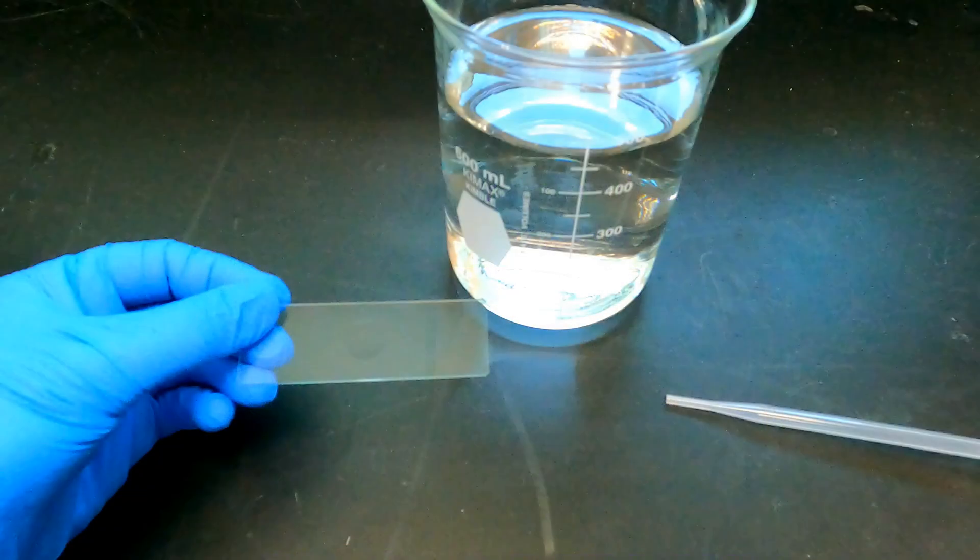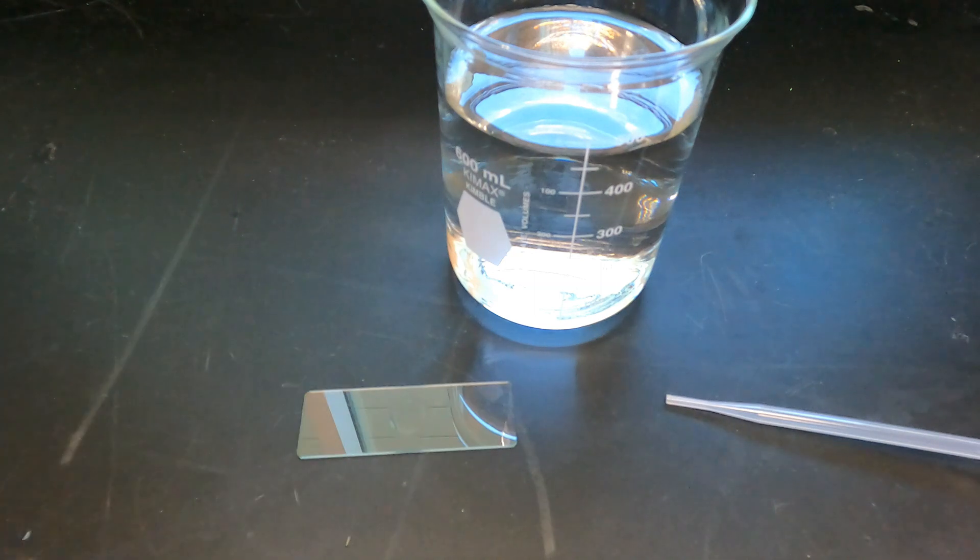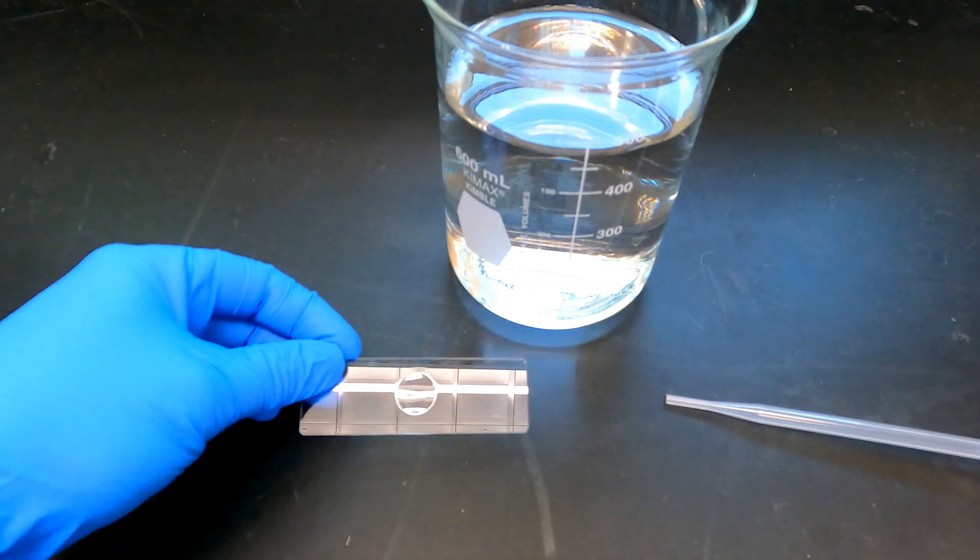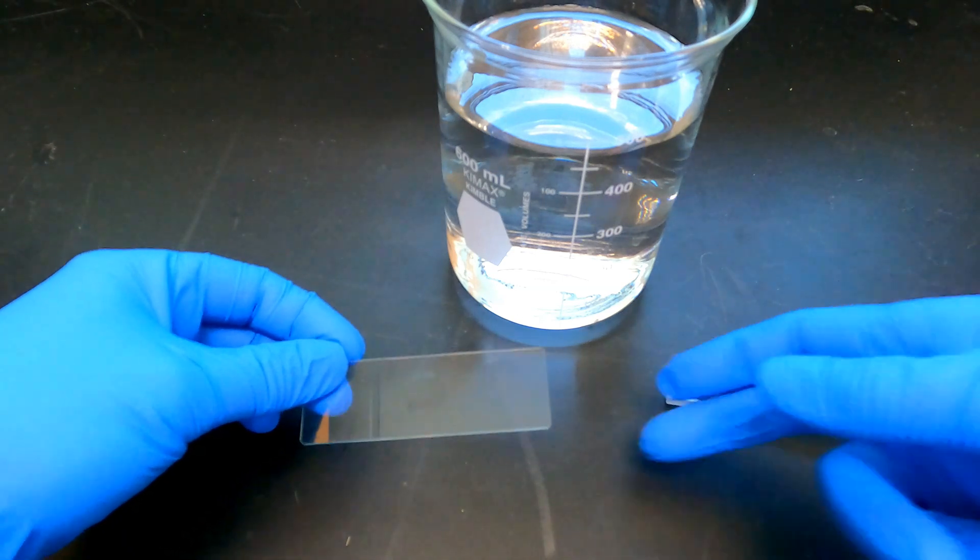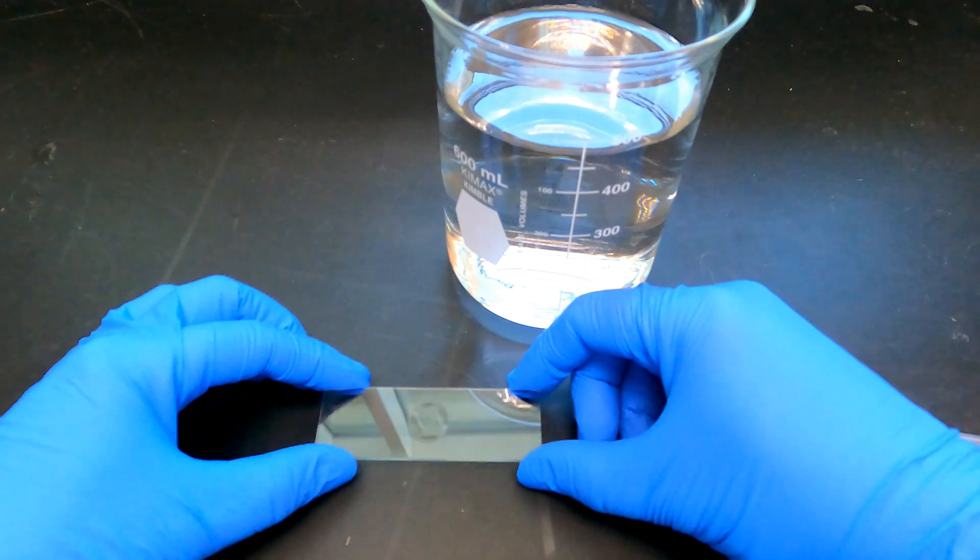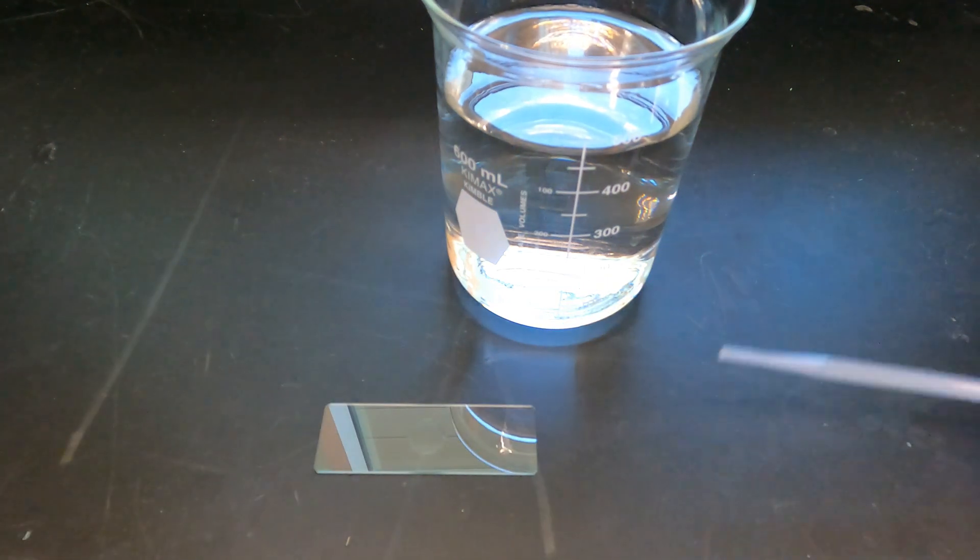First, you need to obtain a slide on which your Daphnia will rest as you view it under the microscope. Available slides in your lab may include simple flat microscope slides or, as in the case shown here, depression microscope slides. Depression microscope slides have a round depression or divot in the center of the slide. You can use your finger to determine which side of the slide the depression is on. Be sure to keep the depression on the top side.